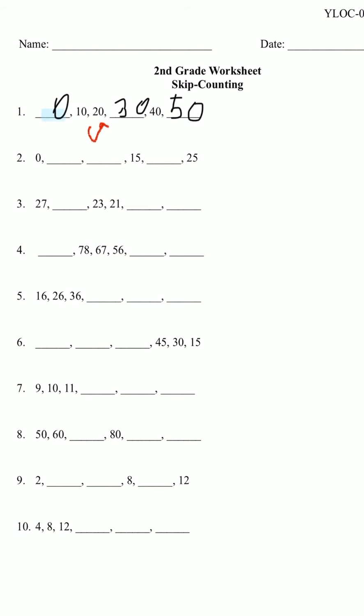Okay, let's try number two. We have zero, something, something, 15, something, and then 25. We're adding five. Okay. So zero plus five is five. Five plus five, one, two, three, four, five, six, seven, eight, nine, 10, right? So 10.